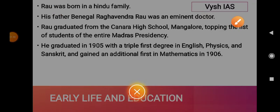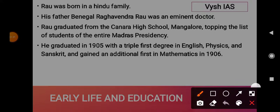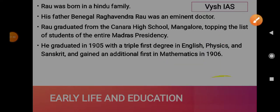He was born in a Hindu family. His father, Benegal Ravabendra Rao, was an eminent doctor. He graduated from Canara High School, Mangalore, Karnataka — which was erstwhile in the Madras Presidency — and he topped the list of students in the entire Madras Presidency. He graduated in 1905 with a triple first degree in English, Physics, and Sanskrit, and gained an additional first in Mathematics in 1906.